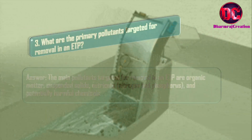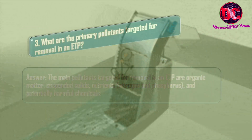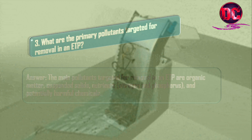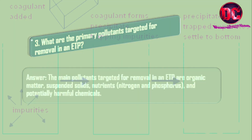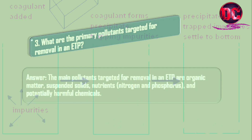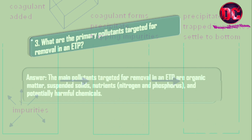3. What are the primary pollutants targeted for removal in an ETP? Answer: The main pollutants targeted for removal in an ETP are organic matter, suspended solids, nutrients (nitrogen and phosphorus), and potentially harmful chemicals.